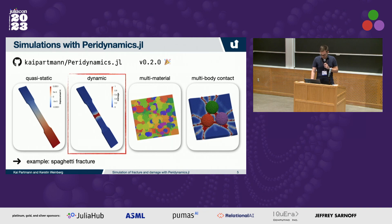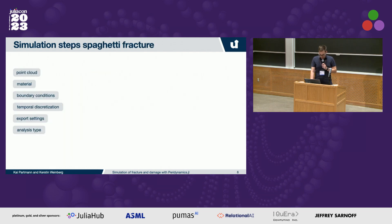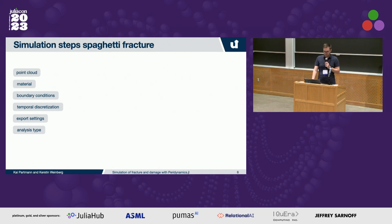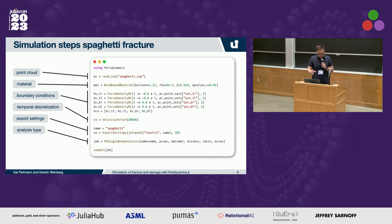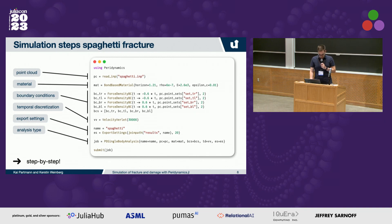What we will focus on now is an example simulation using this dynamic framework with the velocity-Verlet algorithm. We need six steps to perform the simulation of this spaghetti fracture problem. What you can see here is the full source code needed with the package, and these steps are all included in the source code. We'll go through that step by step now.